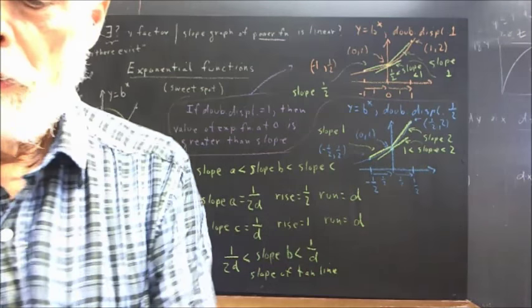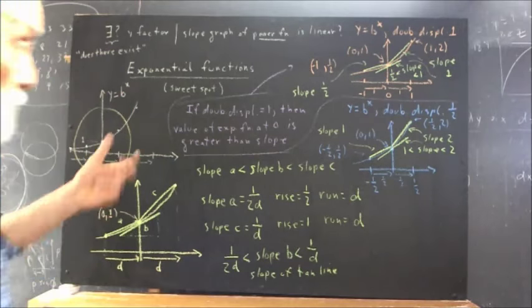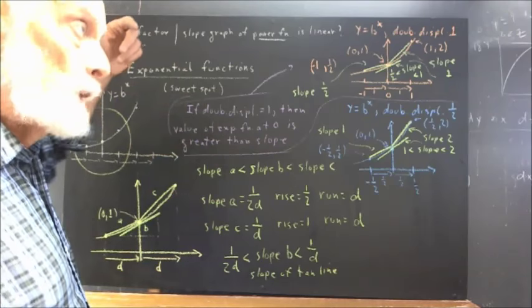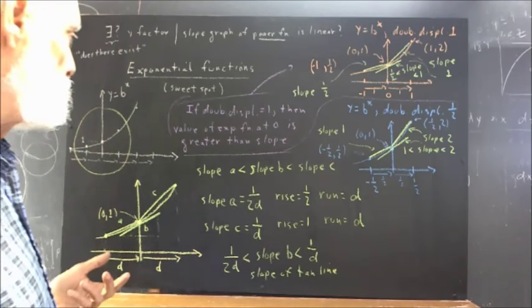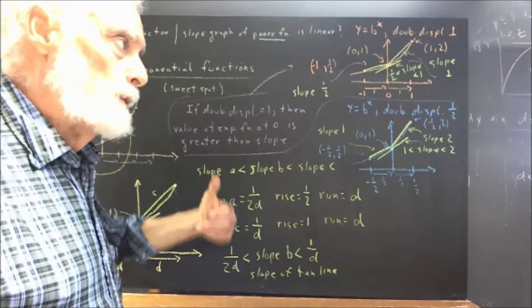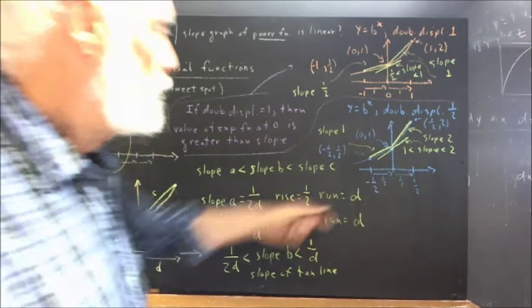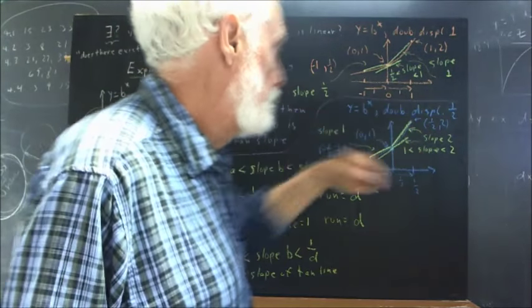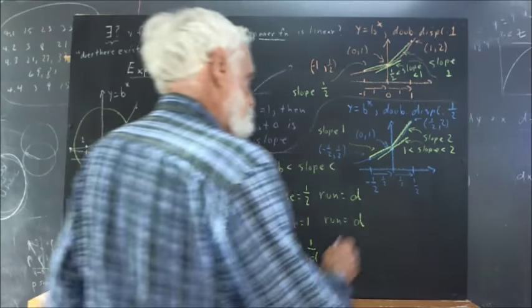Okay, now we want to write out a statement comparing the value of the function to the slope. How does the value of the function at this point compare to the value of the slope?